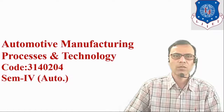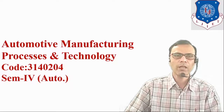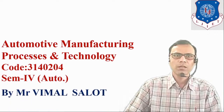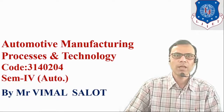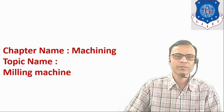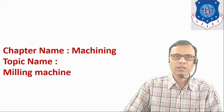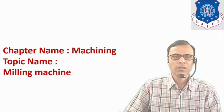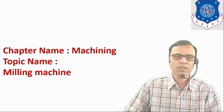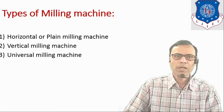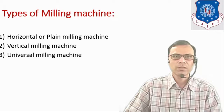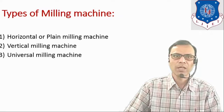Hello everyone, welcome to the course of Automotive Manufacturing Processes and Technology. Myself Vimal Saloth from LJ Institute of Engineering and Technology. In this session we are going to discuss about milling machine, its construction, working and different types of operations which can be performed on milling machine. Mainly there are three types of milling machine: horizontal milling machine, vertical milling machine and universal milling machine.